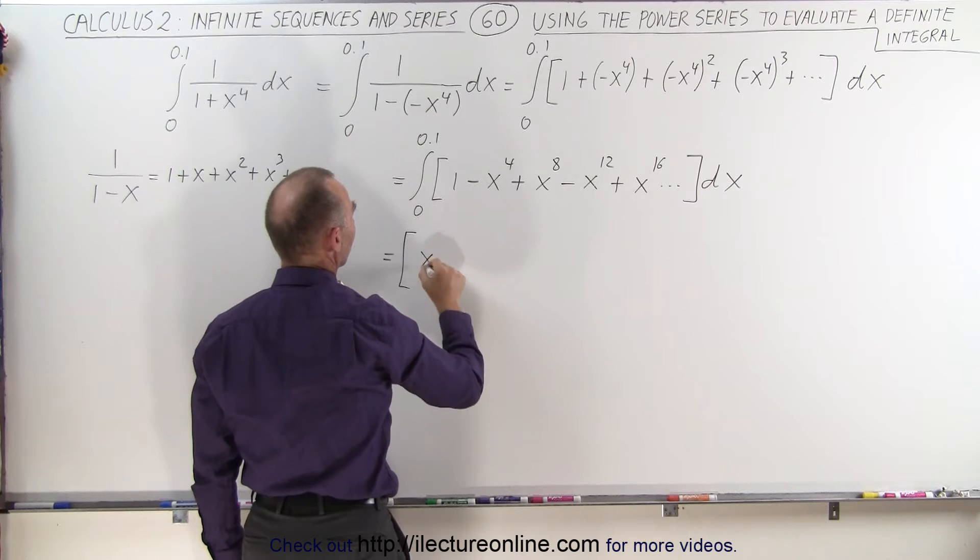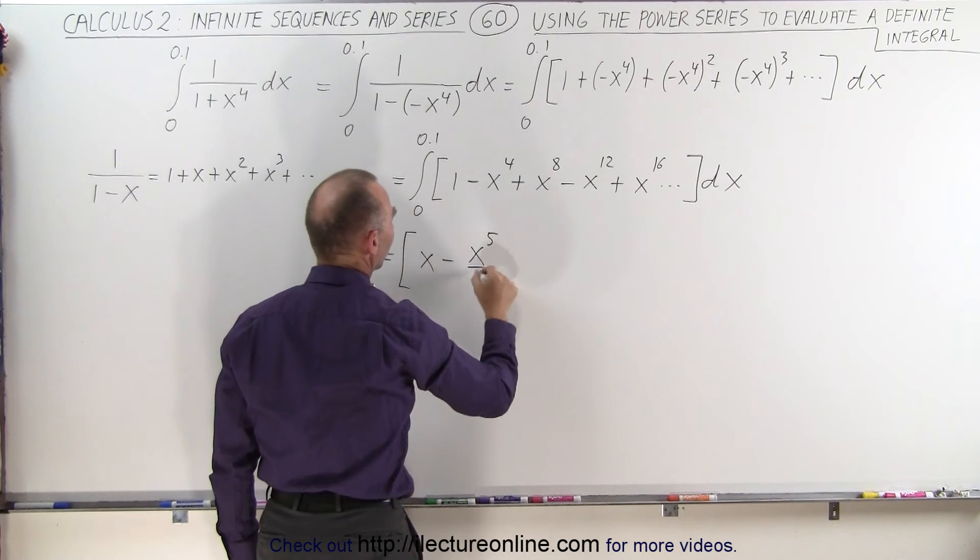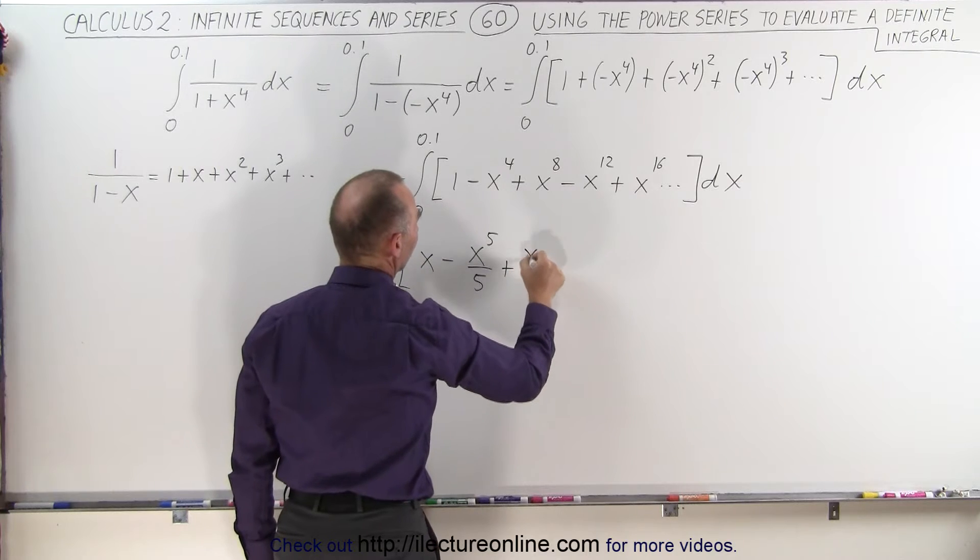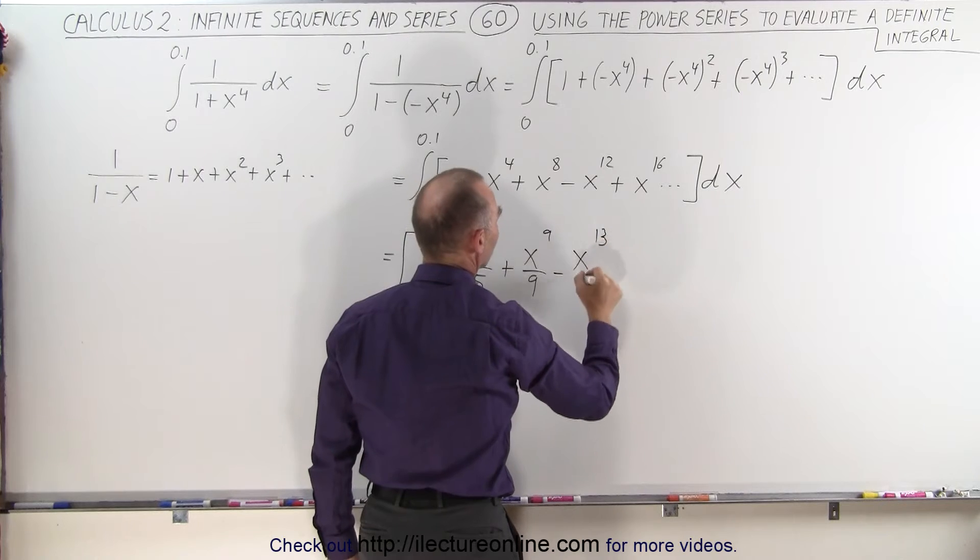The integral of 1 is x, minus the integral of this would be x to the fifth over 5, plus x to the ninth over 9, minus x to the thirteenth.